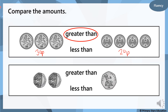Here we have two 20ps. Is it greater than 50 pence, or less than 50 pence? Let's work out the value: 20p add 20p equals 40p. And on this side we have our 50 pence. So which is correct — is 40 pence greater than 50 pence, or is 40 pence less than 50 pence? 40 pence is less than 50 pence.